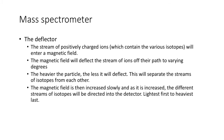Now we have the deflector. The stream of positively charged ions enters a magnetic field — an electromagnetic field where you can control the strength. The magnetic field deflects the stream of ions, and they move off their path by varying degrees. Like wind blowing balls — a lighter ball is more affected by the wind than a heavier ball. So the heavier the particle, the less it will deflect. This separates the streams of isotopes from each other.